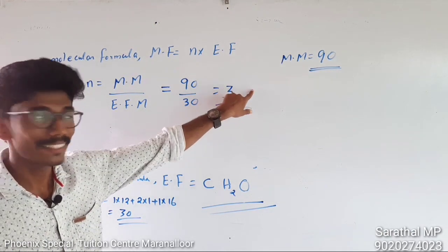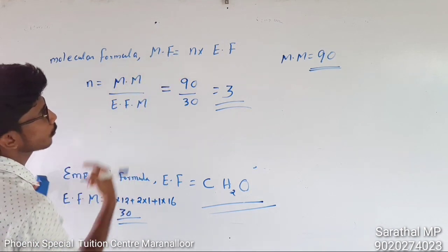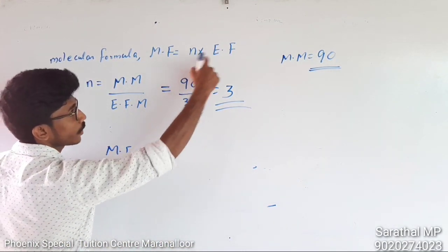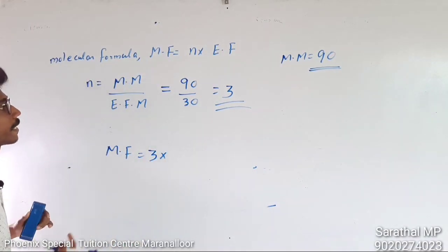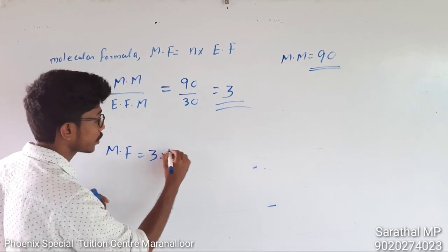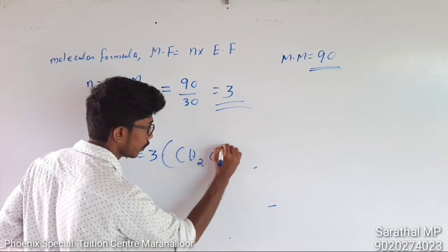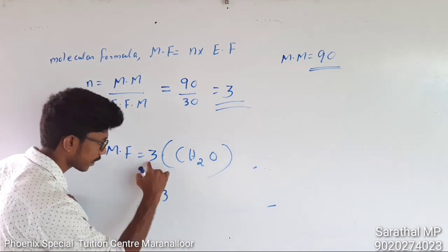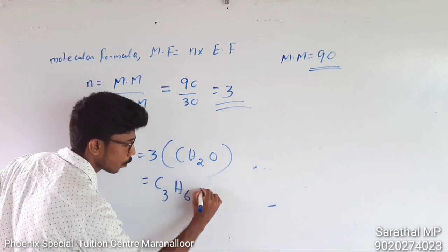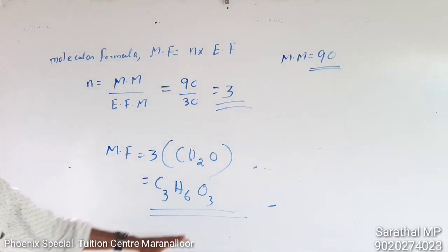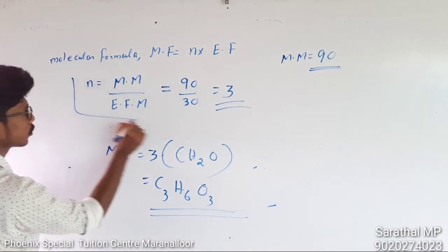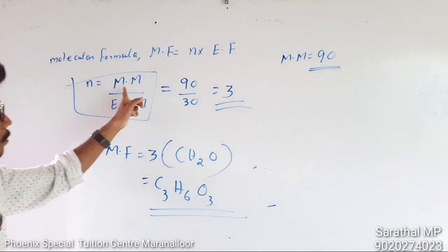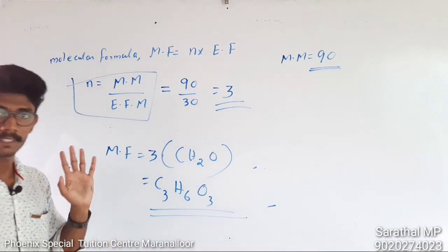So n equals 3. The molecular formula equals n times the empirical formula, which is 3 into CH₂O. Multiplying each subscript by 3 gives us C₃H₆O₃. This is the molecular formula. To summarize: the number of moles n equals molecular mass divided by empirical formula mass, giving us 90 divided by 30 equals 3, and the molecular formula is C₃H₆O₃.